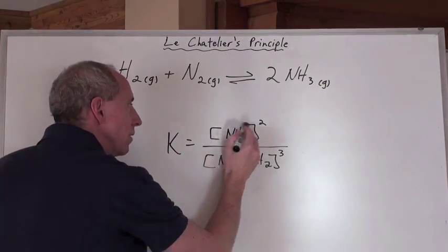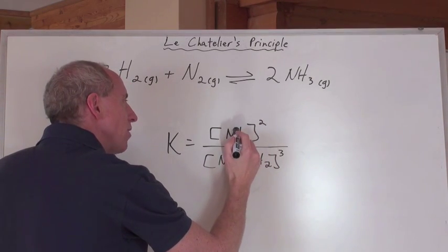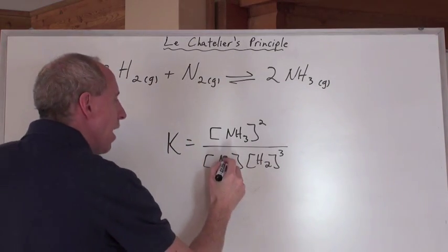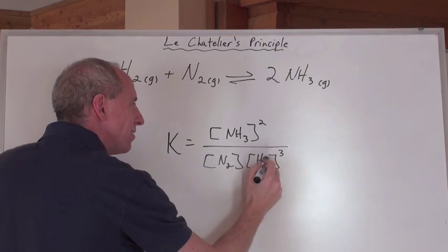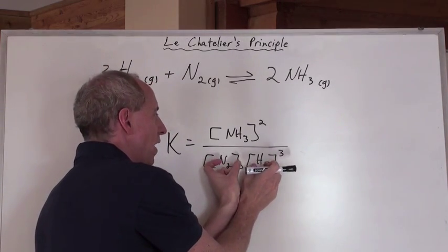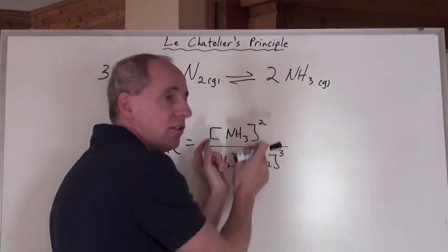This concentration doubled, but it's squared. So you could say that the concentration doubles squared. And now, this doubles, and this doubles cubed. Oh my goodness. The doubling effect has more of an effect in the denominator here than it does as a numerator.